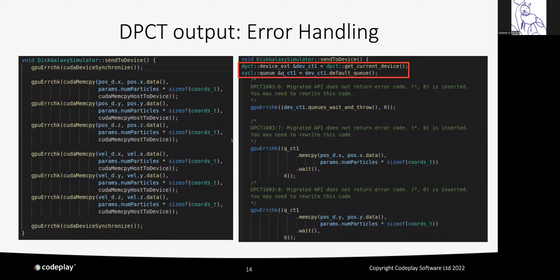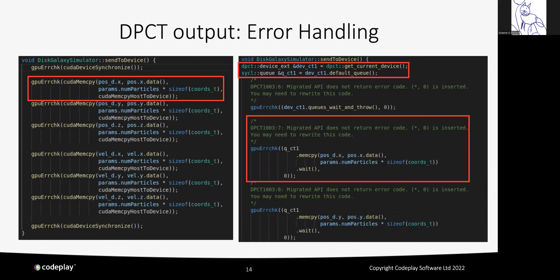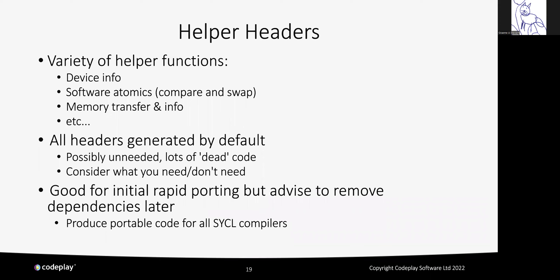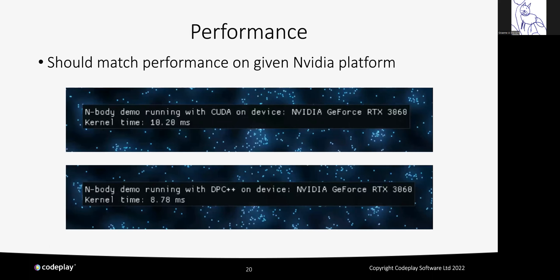If I were writing this code from scratch, I would have the queue as a member of my galaxy simulator class and initialize it in the constructor. DPCT considers that too bold a design choice to make safely, which is understandable given how hard it is to understand possible side effects. But I'm starting to feel that wherever I see these helper headers, it's telling me I need to make a structural change that would remove the need for them.